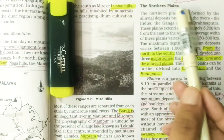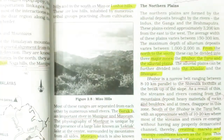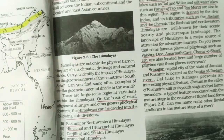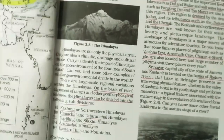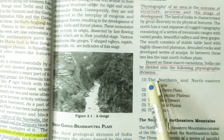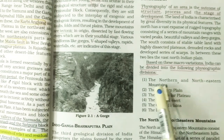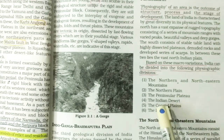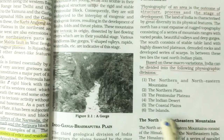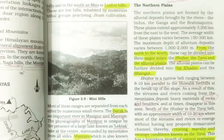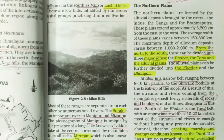So let's start. The Northern Plains — first of all, let me tell you that here we are studying about Physiography. We have already covered the Himalayas and the northern and northeastern mountains. Today we will cover the Northern Plains, the Peninsular Plateau, the Indian Desert, the Coastal Plains, and the Islands. This video will be in Hindi and English — we will try to understand it at the base level.